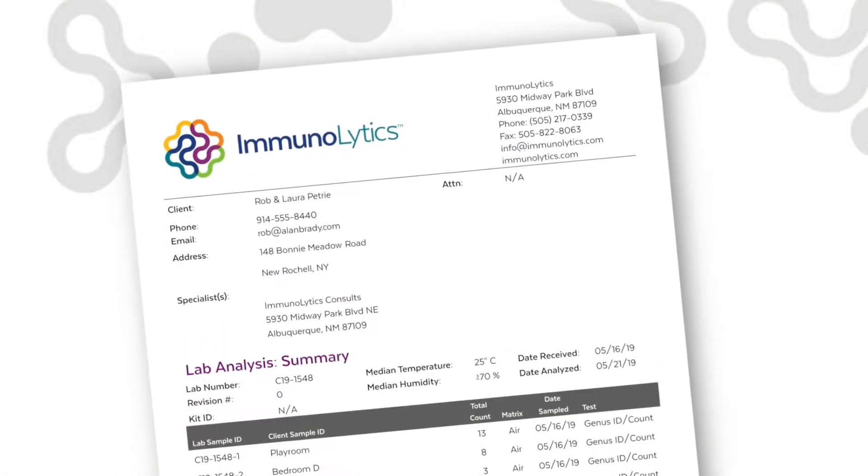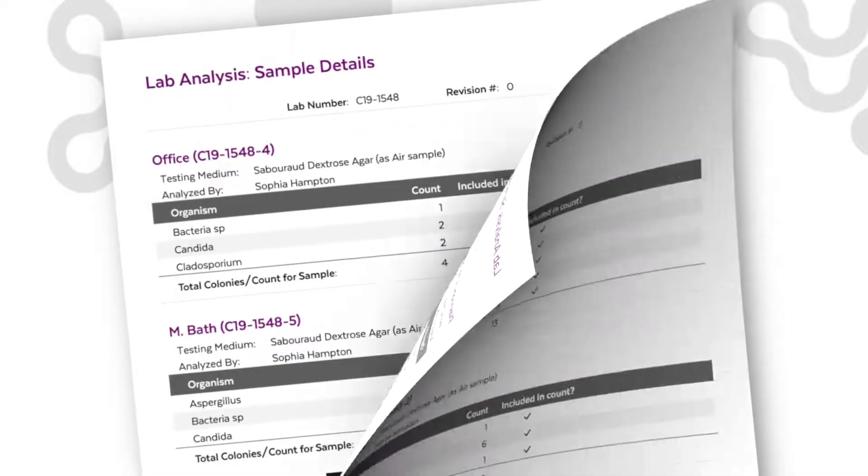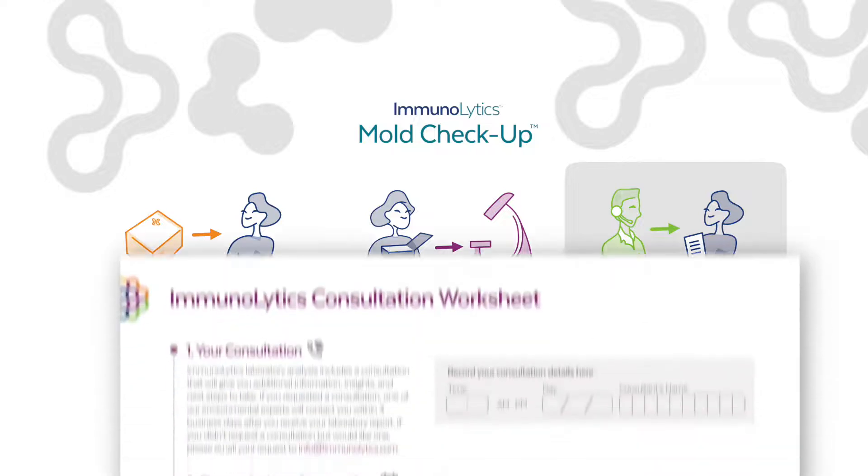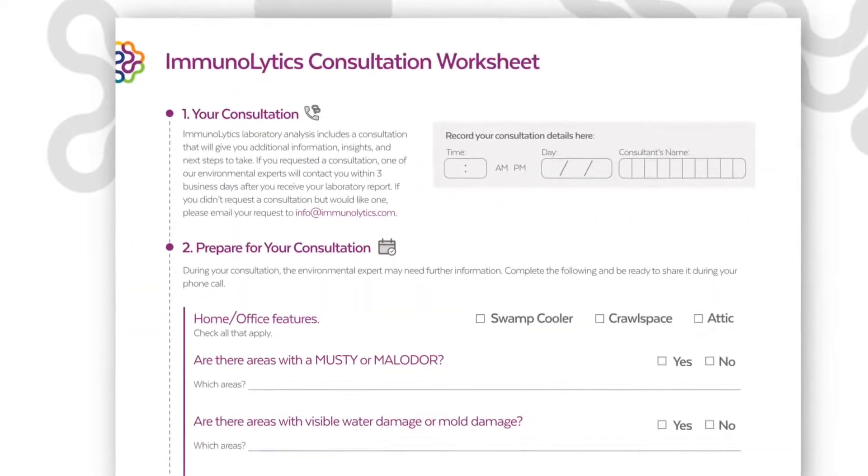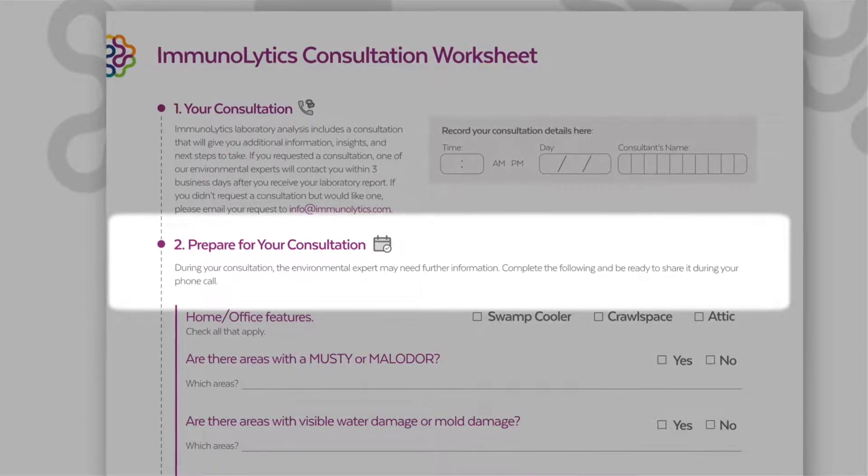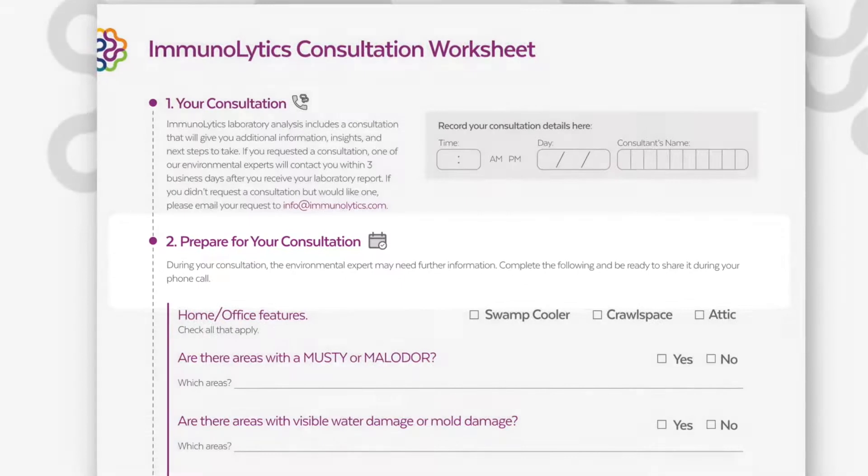We encourage you to review all the parts of your report thoroughly. Now that you've looked over your report, you're ready for the final element of the Immunolytics Mold Checkup, a phone consultation with one of our environmental experts. You'll find the final page of your report is a consultation worksheet. Please complete Part 2, preparing for your consultation, so you'll have the information ready to share with your consultant.